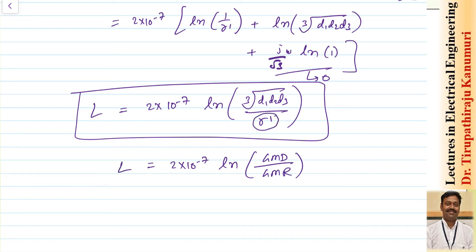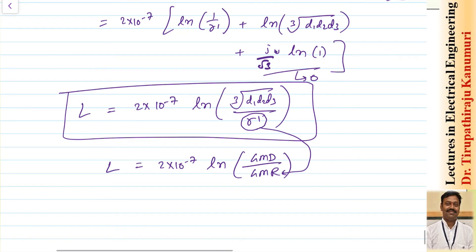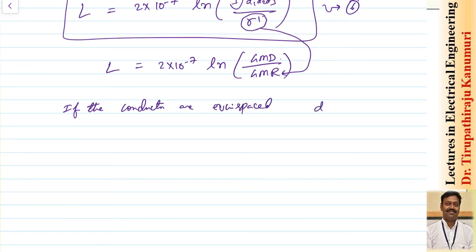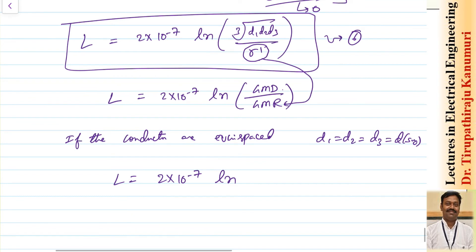The result is L = 2×10⁻⁷·ln(GMD/GMR) H/m — equation 6 — the general formula. Here GMD (geometric mean distance) = ∛(d1·d2·d3) and GMR = r' for a solid conductor; for stranded conductors the respective GMR applies. For equispaced conductors where d1 = d2 = d3 = d, this simplifies to L = 2×10⁻⁷·ln(d/r') H/m — equation 7.